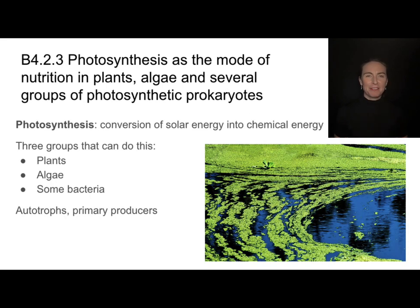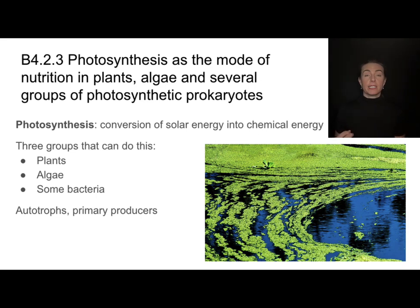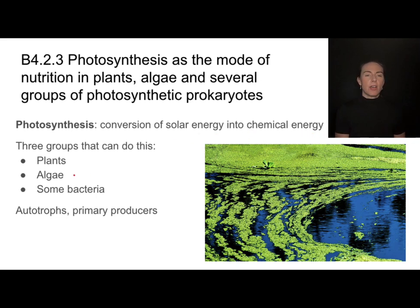You'll often hear people from different branches of biology referring to the same organisms by different names. Cell biologists might call these organisms autotrophs — they produce their own food. Ecologists might call them primary producers, referring to the role they play in an ecosystem. These are just names for photosynthetic organisms, which include plants, algae, and different types of photosynthetic prokaryotes like bacteria. What they all have in common is photosynthesis — turning light or solar energy into chemical energy in the form of carbohydrates.